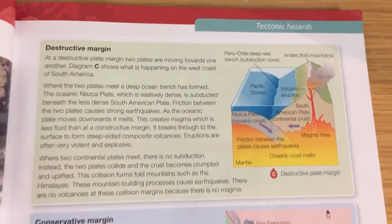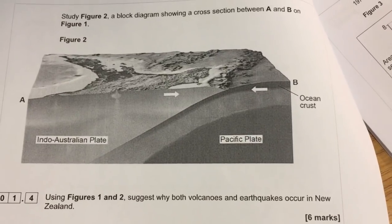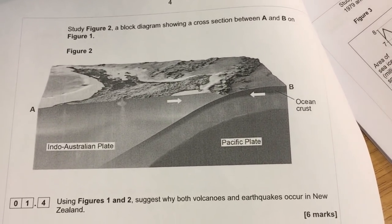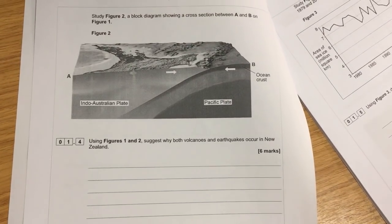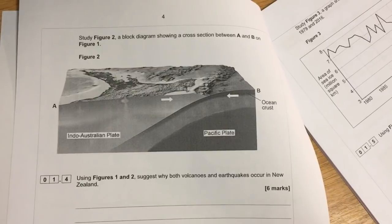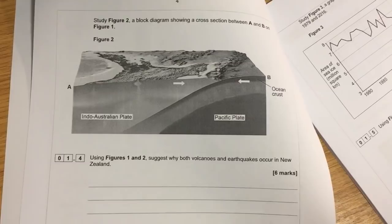The question says: suggest why both volcanoes and earthquakes occur in New Zealand. You start by referring to the figure — you've got a conservative margin to the south and a destructive plate margin to the north. Therefore you have two very active margins with real destruction. At a conservative margin you get earthquakes — that's why you get lots of earthquakes on the South Island. Up in the north, it's very much a volcanic and earthquake zone due to subduction of the oceanic plate under the continental plate. The oceanic plate is denser and heavier, so it sinks into the magma and melts.